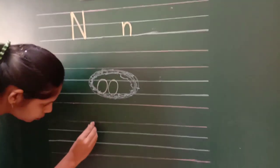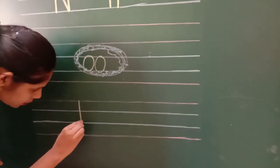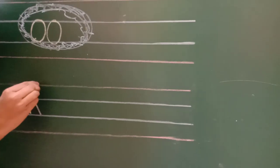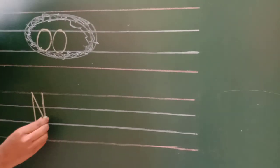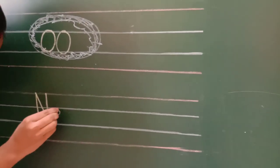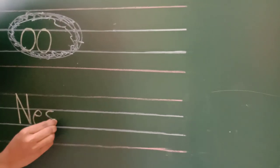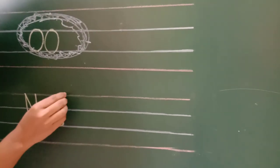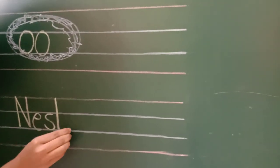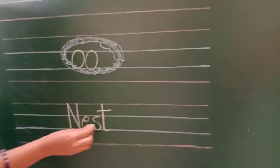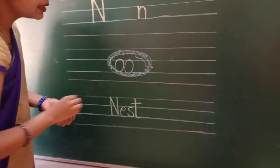Here we are going to write the spelling of nest: N, E, S, T — nest.